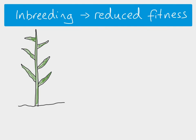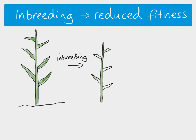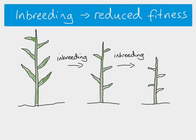The idea that inbreeding leads to reduced fitness: if you have a maize plant and you do inbreeding — breeding it with closely related individuals, or even self-pollination which is a form of inbreeding — then you end up with offspring that don't grow as well, represented here by their height. Over many generations, you end up with shorter and shorter plants that don't grow as well and don't produce as much maize. The reason for this is to do with homozygosity.